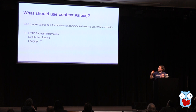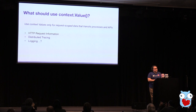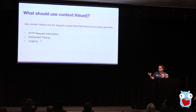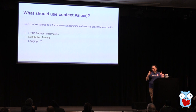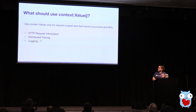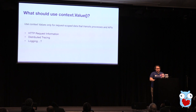So what should you use context values for? The documentation gives some guidance here for request-scoped data that transits processes and APIs. I'm going to talk about a couple of examples we've used and a couple of anti-patterns we've seen. The places we are using context today are our HTTP request information — most of our processes are HTTP requests. We also use libraries for distributed tracing; most of these interact with context. And then maybe slightly more controversially, we do use context to enable some of our logging, which I'll go into in more depth.